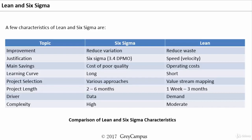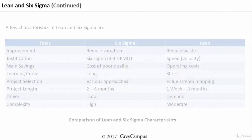The driver for any Six Sigma project is data, because Six Sigma is a data-driven methodology, whereas Lean is demand-driven — the demand from the customer drives the Lean initiatives in the company. The complexity is very high in a Six Sigma project, whereas the complexity is moderate in Lean.